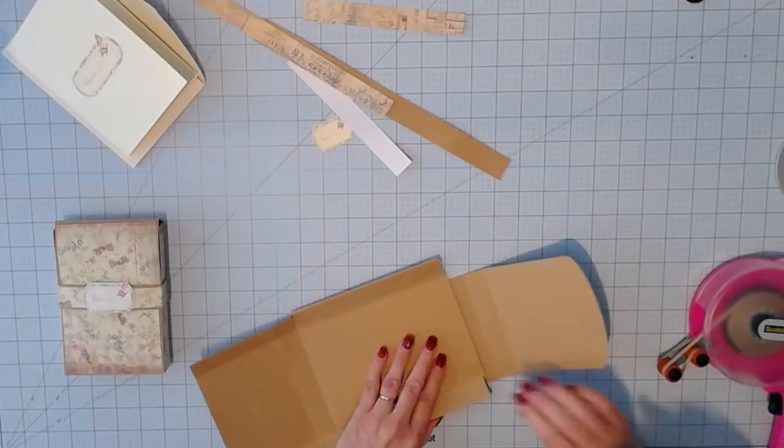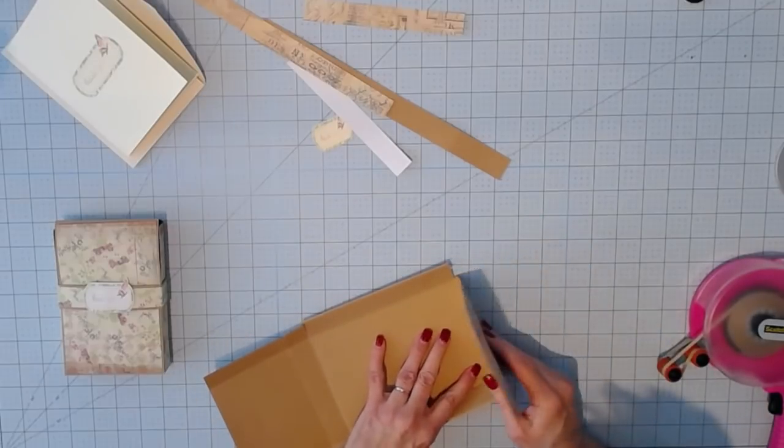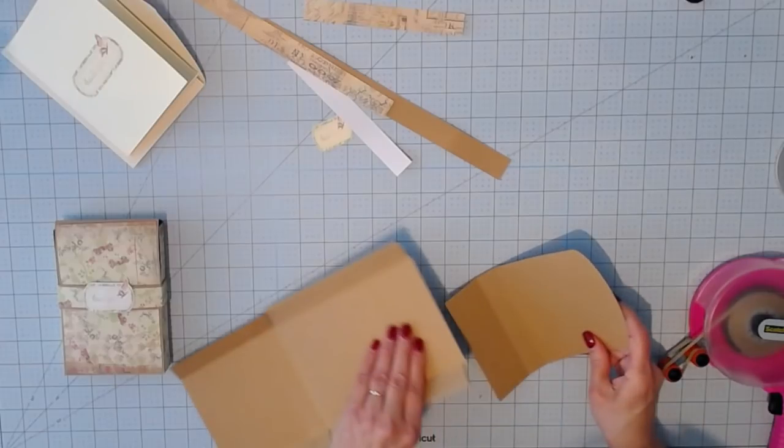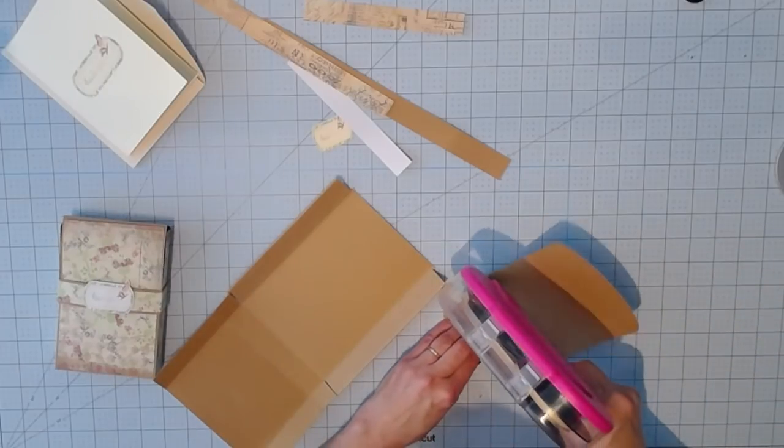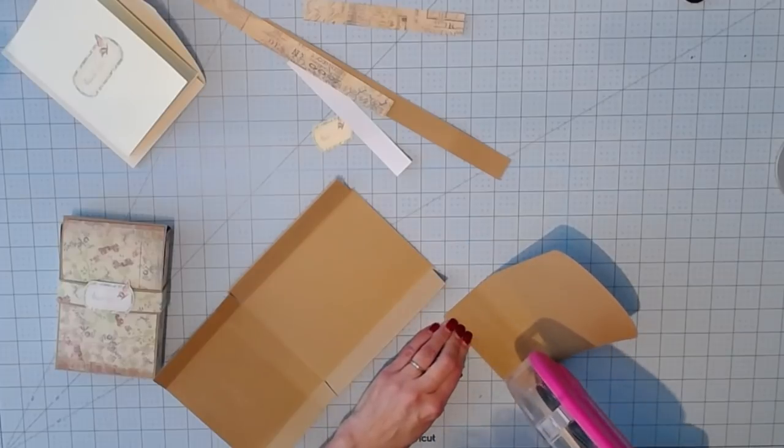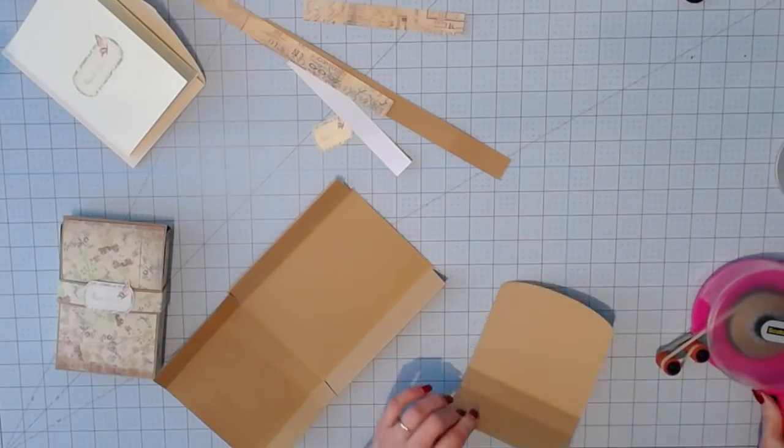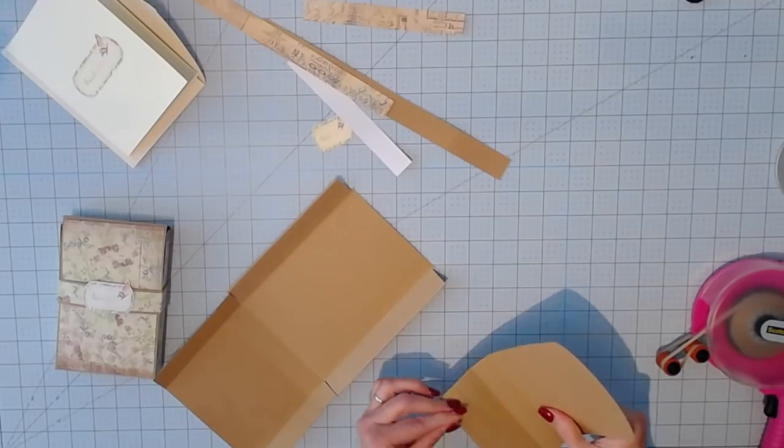Next, we're going to attach the top of this box. As you can see, you want to line it up right along that bottom score line. Use adhesive or tape runner, whichever you prefer to work with, and line it up nice and straight.